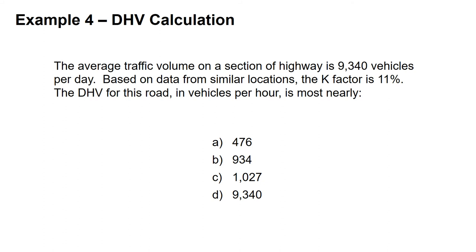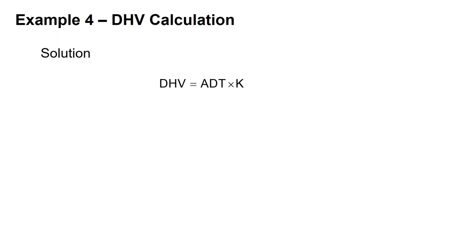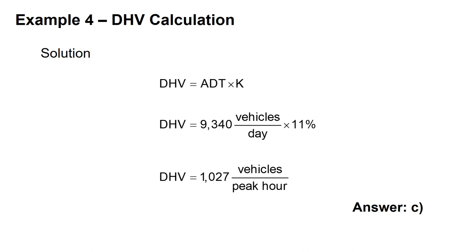Example: We have an average traffic volume of 9,340 vehicles per day, and the K factor on similar roads is 11%. We're asked for the DHV. DHV = ADT × K = 9,340 × 11% = 1,027 vehicles during the peak hour, which is answer C.